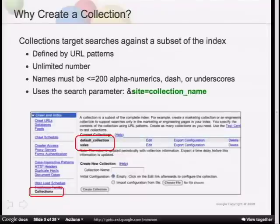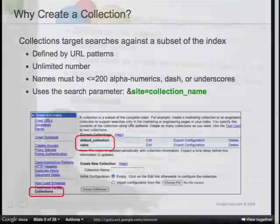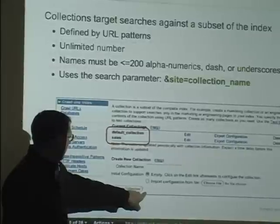To create a collection, it's very simple and quick. It's all in the box — no software to install, no big configuration wizard to go through. You just go to 'Content Index > Collections,' give it a name, and click 'Create.' You can also import the configuration from a file.